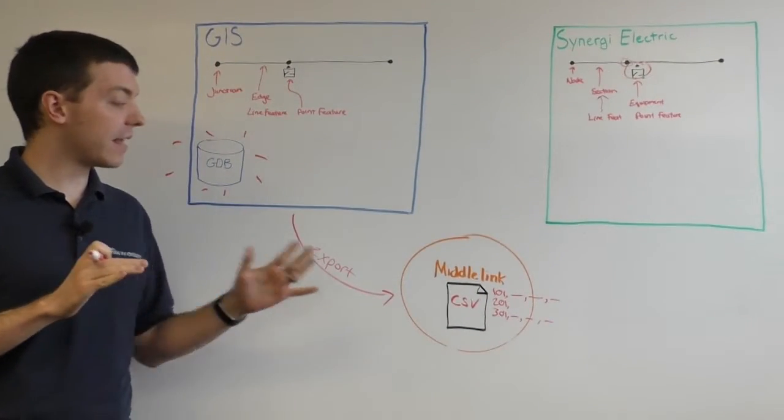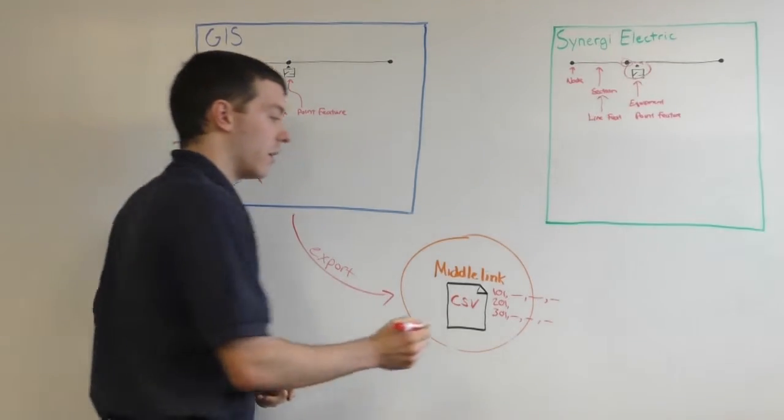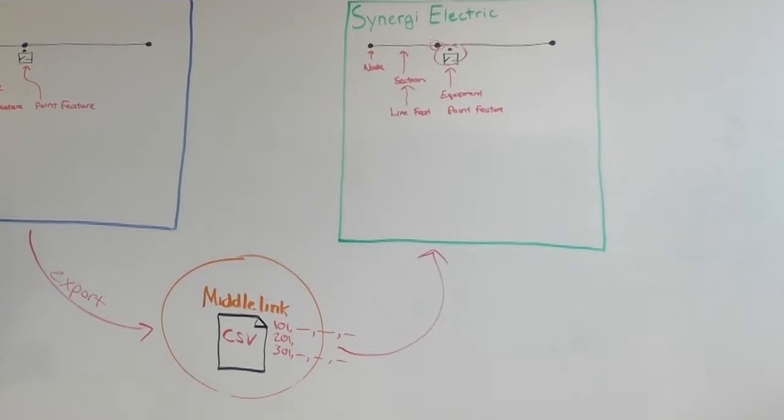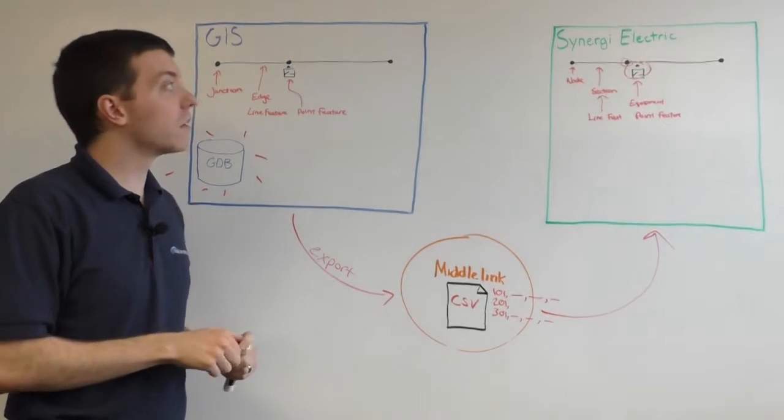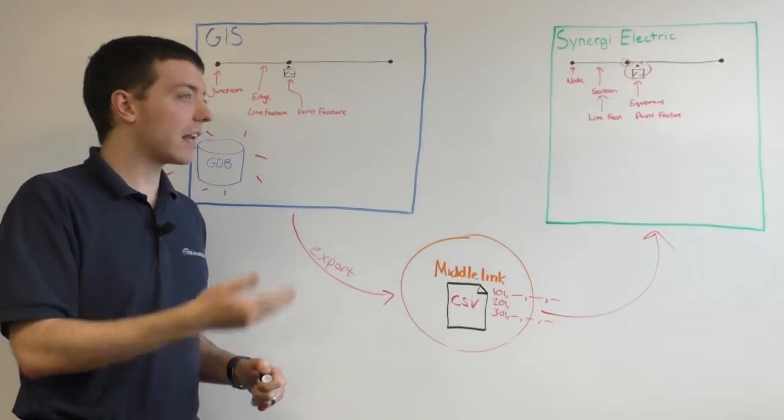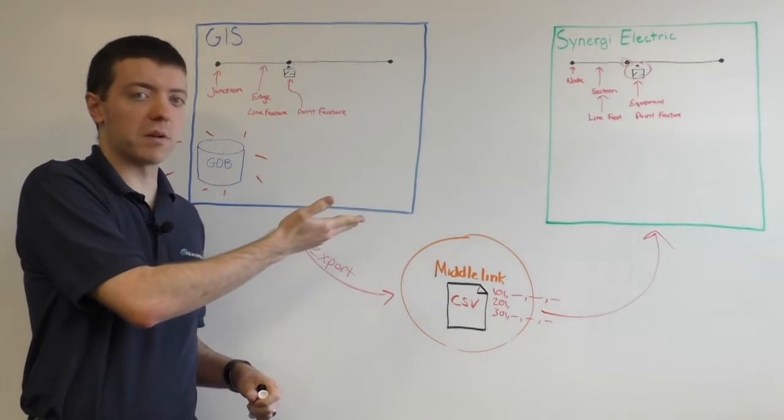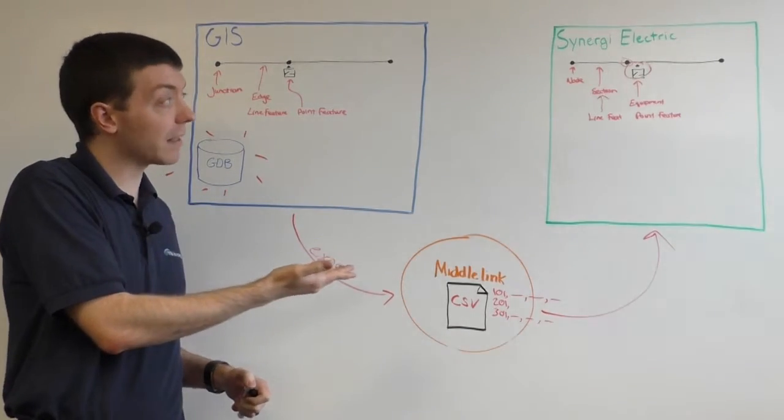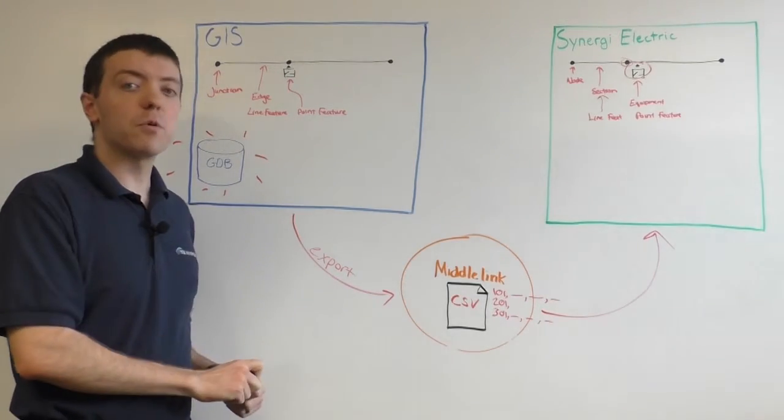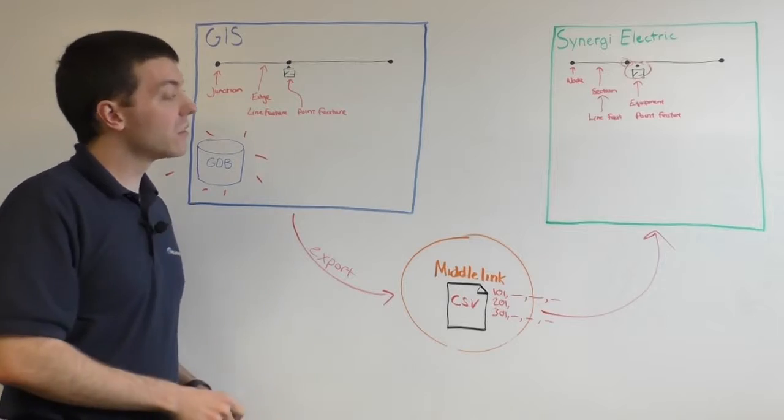So whenever you need to, you can then import the MiddleLink data through Synergy's native interface into the application. So once your data is loaded into Synergy Electric, you're not necessarily done. You're going to be able to massage and analyze your data as necessary from that point going forward with Synergy's additional capabilities. But additionally, Synergy also has a data model that's a little more restrictive than that of GIS.